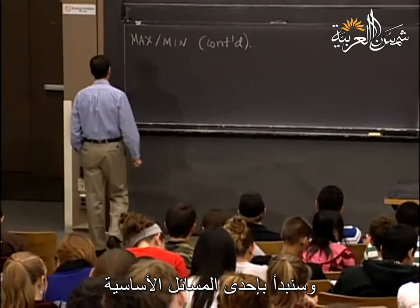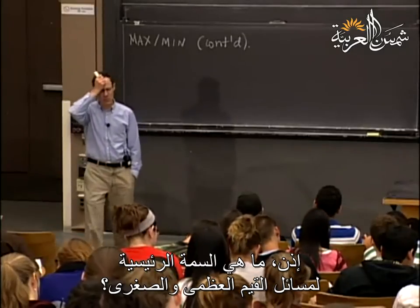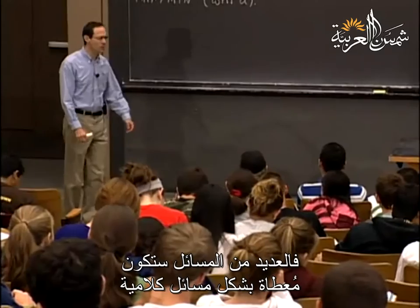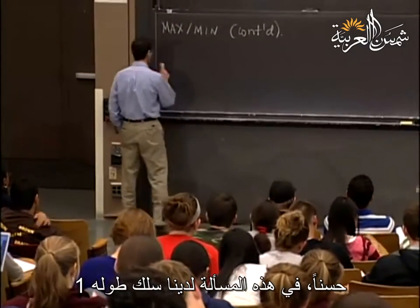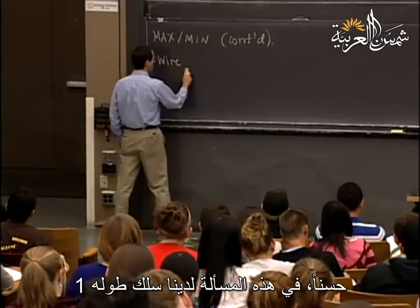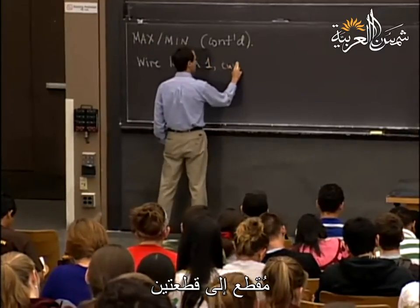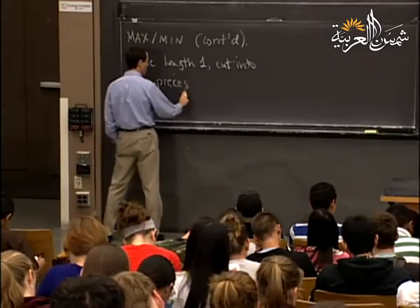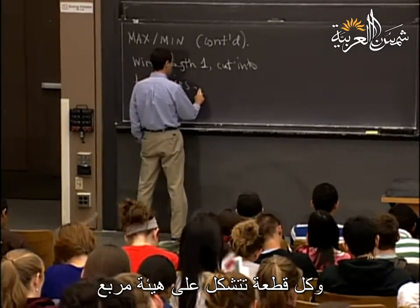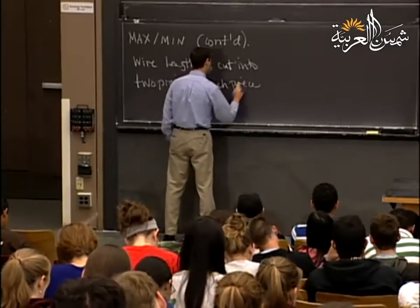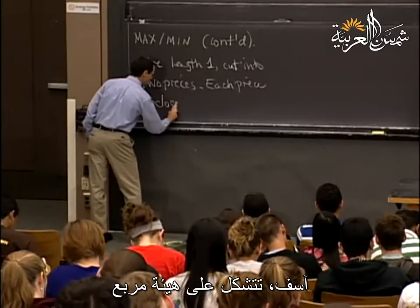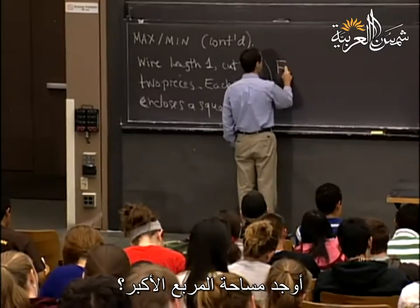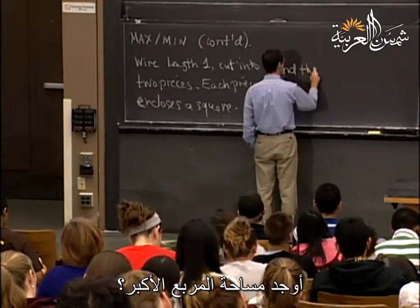We're going to start with a fairly basic one. The main thing about max-min problems is that we're asking you to do more interpretation of word problems — many problems are expressed in words. In this case, we have a wire of length one, cut into two pieces, and each piece encloses a square. The problem is to find the largest area enclosed.